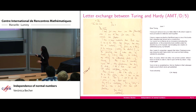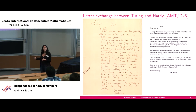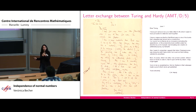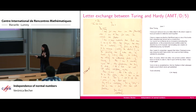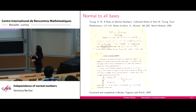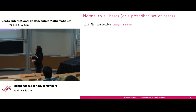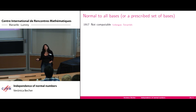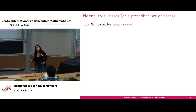Hardy mentions the word 'Champernowne' in that letter. Hardy was Turing's teacher at King's College, Cambridge, which explains their correspondence. There followed a long history of constructions: first non-computable examples, then Turing's computable construction, then Wolfgang Schmidt's construction of numbers normal to an arbitrary set of bases and not normal to the complement.